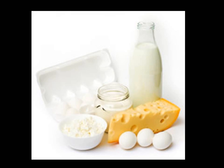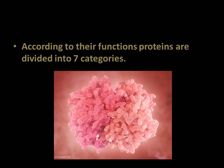Proteins vary in structure as well as function. They are constructed from a set of 20 amino acids and have distinct three-dimensional shapes. According to their functions, proteins are divided into seven categories.